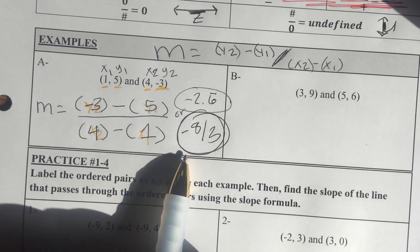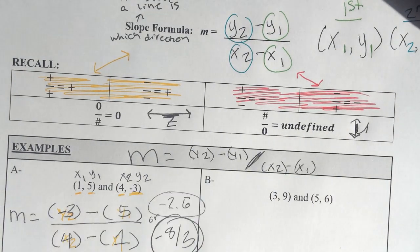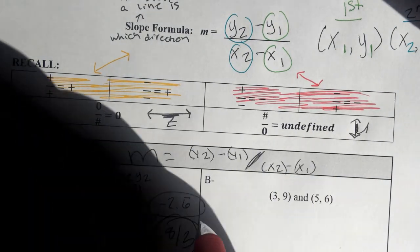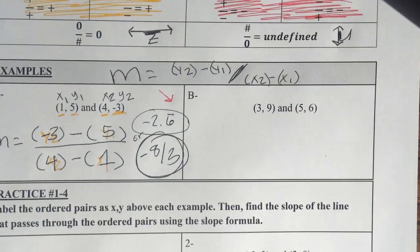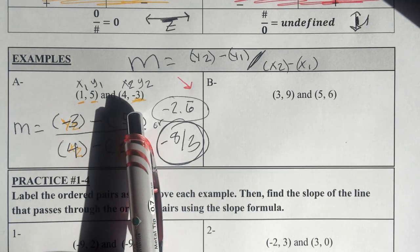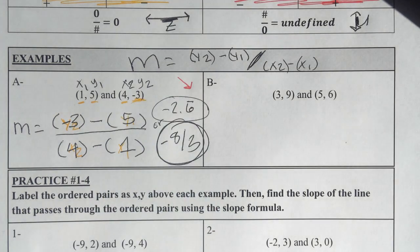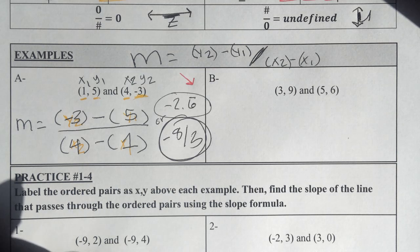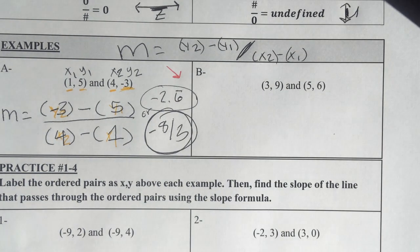So I can say that m is negative 2.6 repeating, or I can say that m is negative 8 thirds. Because this is a negative slope, I know that the line travels going down. Okay, and so I know the slope of the line that goes through those two points, and I know how the line looks already. So I know a lot about the line, and that's it for slope formulas. So I'm going to go look at example B now.